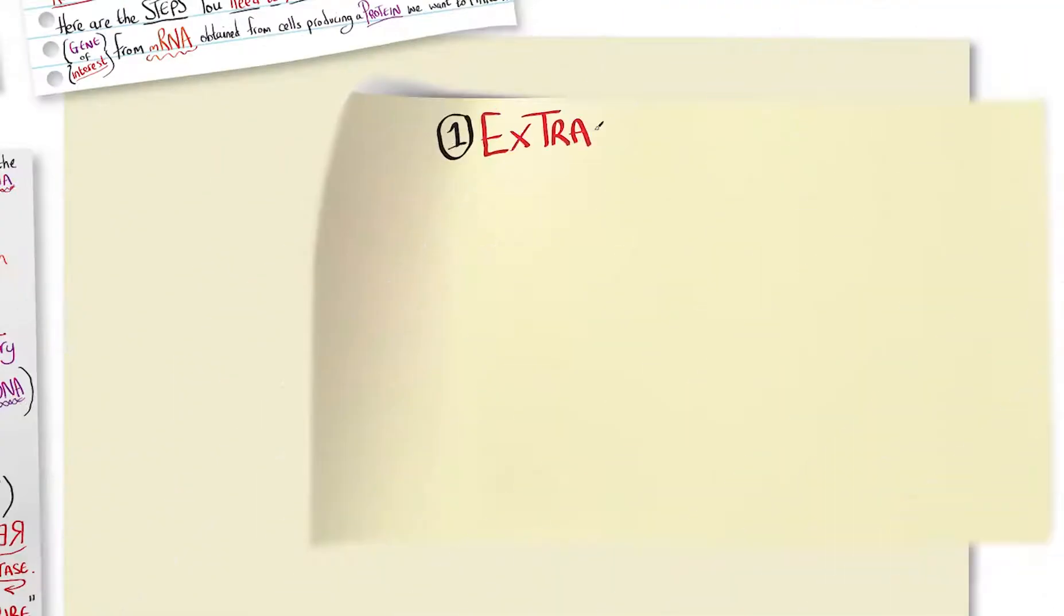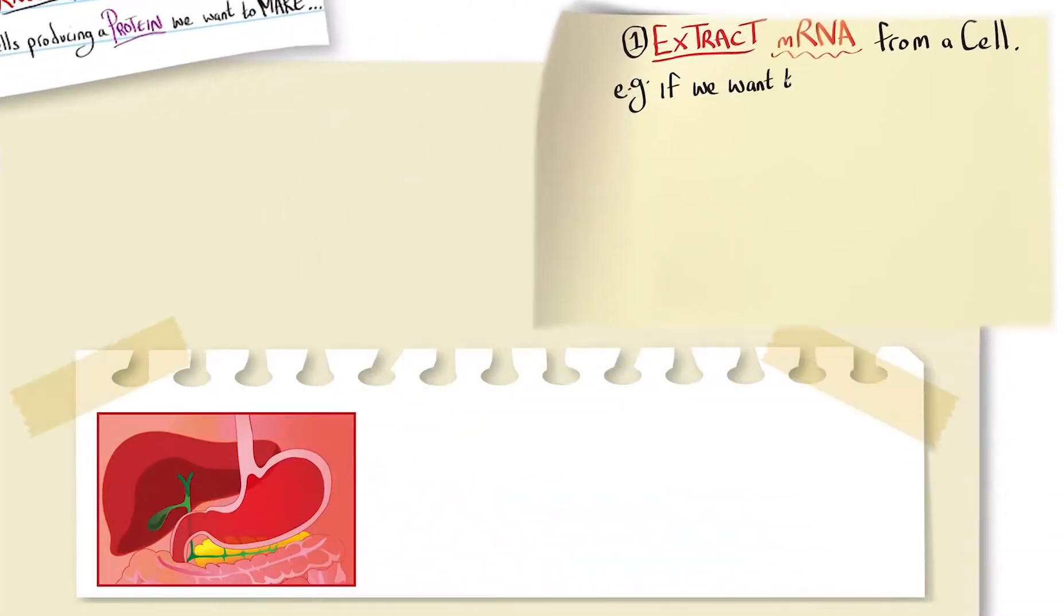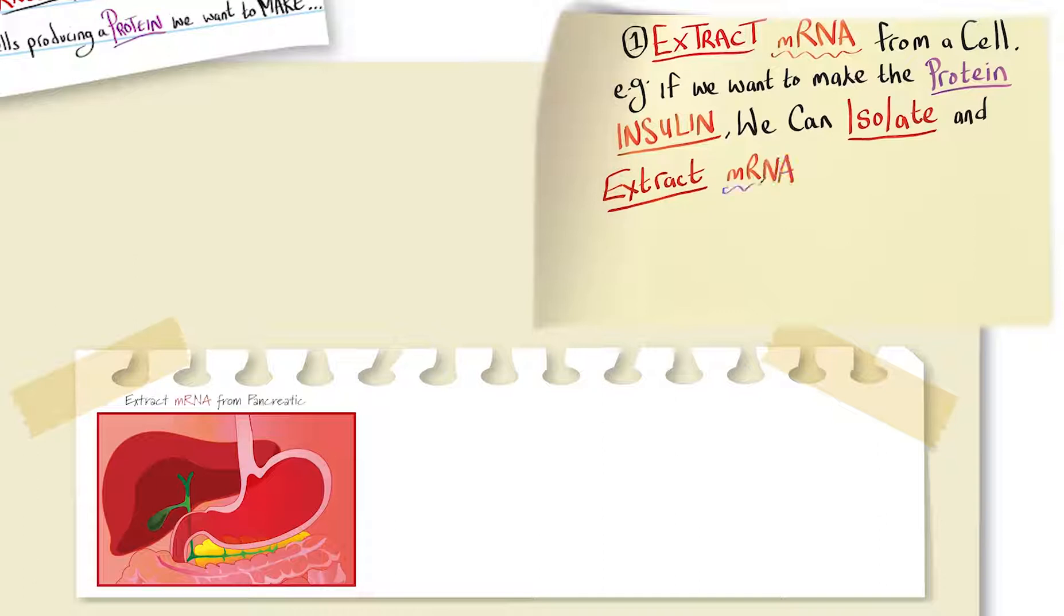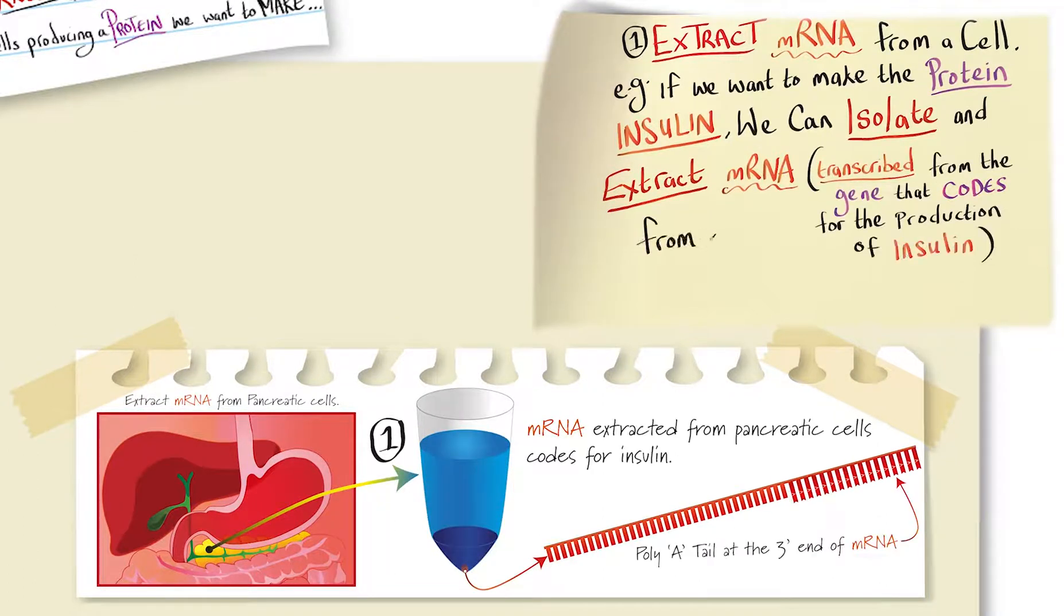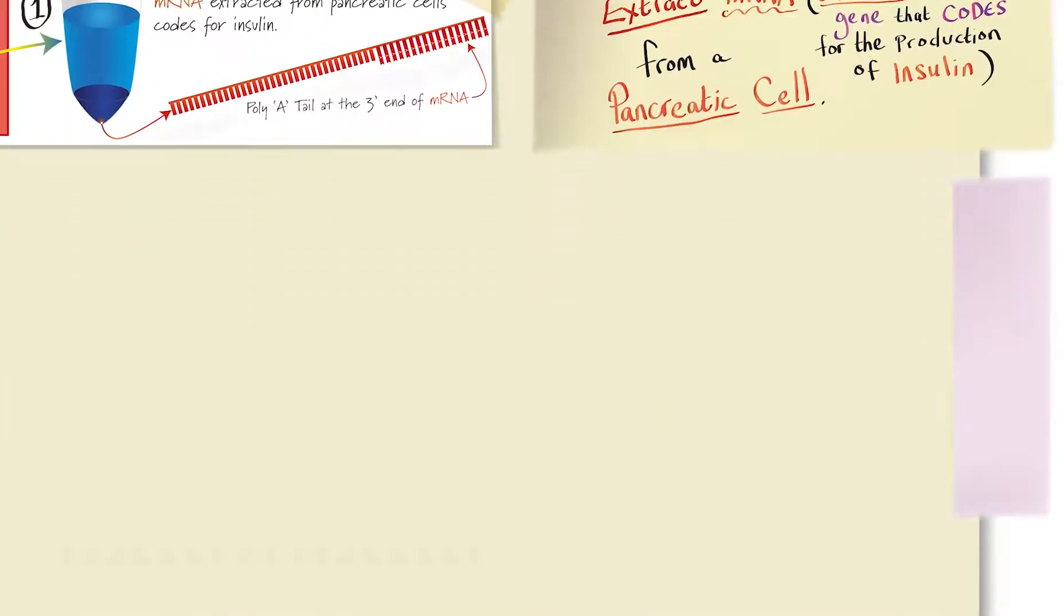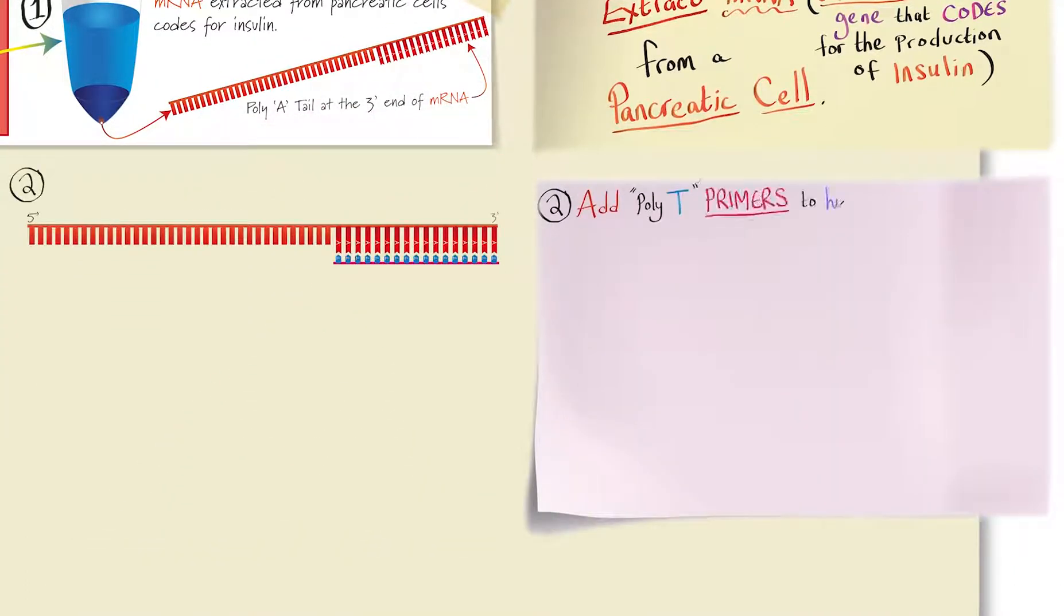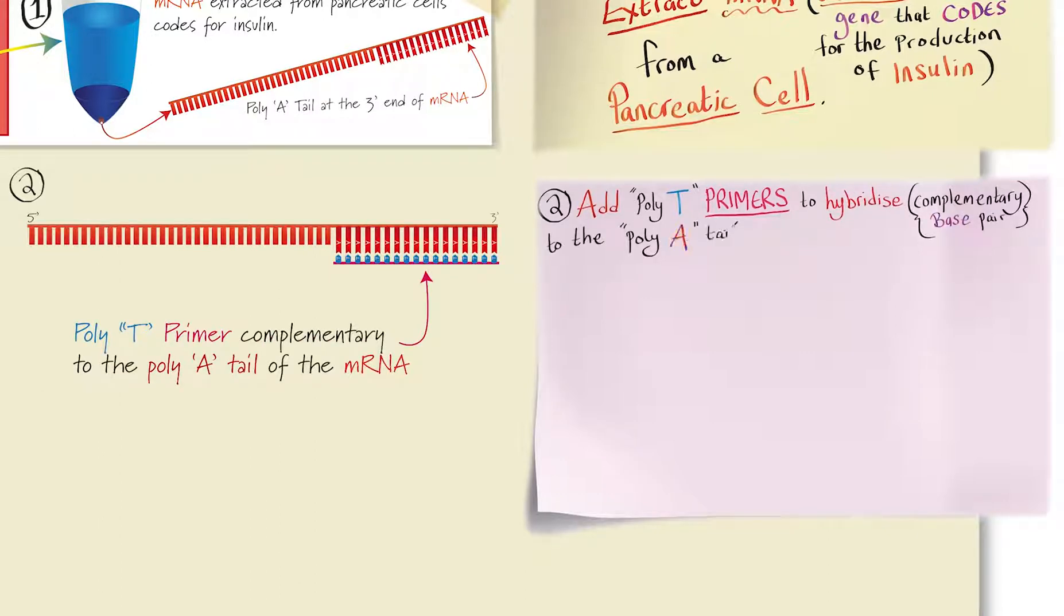Step one, extract messenger RNA from a cell. For example, if we want to make the protein insulin, we can isolate and extract messenger RNA transcribed from the gene that codes for the production of insulin from a pancreatic cell. Step two, add poly T primers to hybridize or complementary base pair to the poly A tail of messenger RNA.